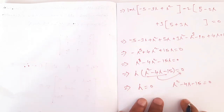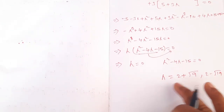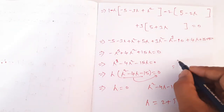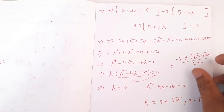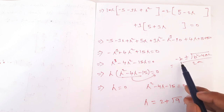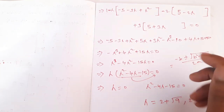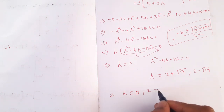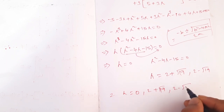So we have to change: lambda into 15 lambda, lambda square minus 4 lambda minus 15 equals 0. So the complex root formula is: lambda equals 2 plus root over 19 or 2 minus root over 19. The root is complex, so the formula is x equals minus b plus or minus root over b squared minus 4ac, by 2a.